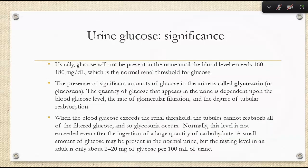Why do we care about urine glucose? Glucose won't appear in urine until blood levels exceed 160 to 180 milligrams per deciliter — the normal renal threshold. The presence of glucose in urine is called glycosuria or glucosuria. The quantity depends on glucose levels in the blood, how glomerular filtration is working, and the degree of tubular reabsorption. When glucose exceeds the renal threshold, the tubules can't reabsorb all of it, so glycosuria occurs.